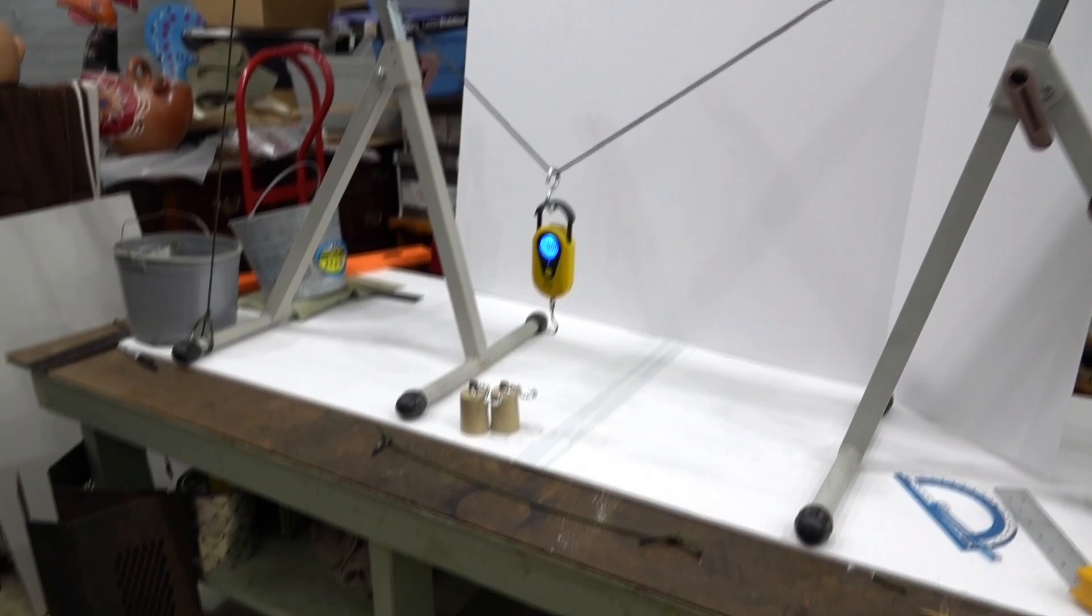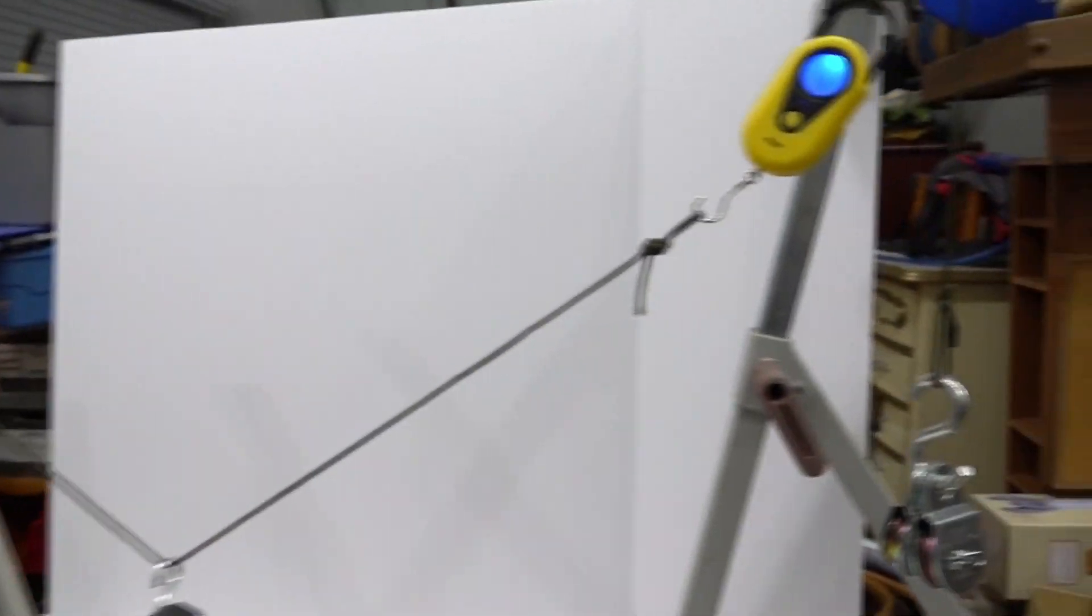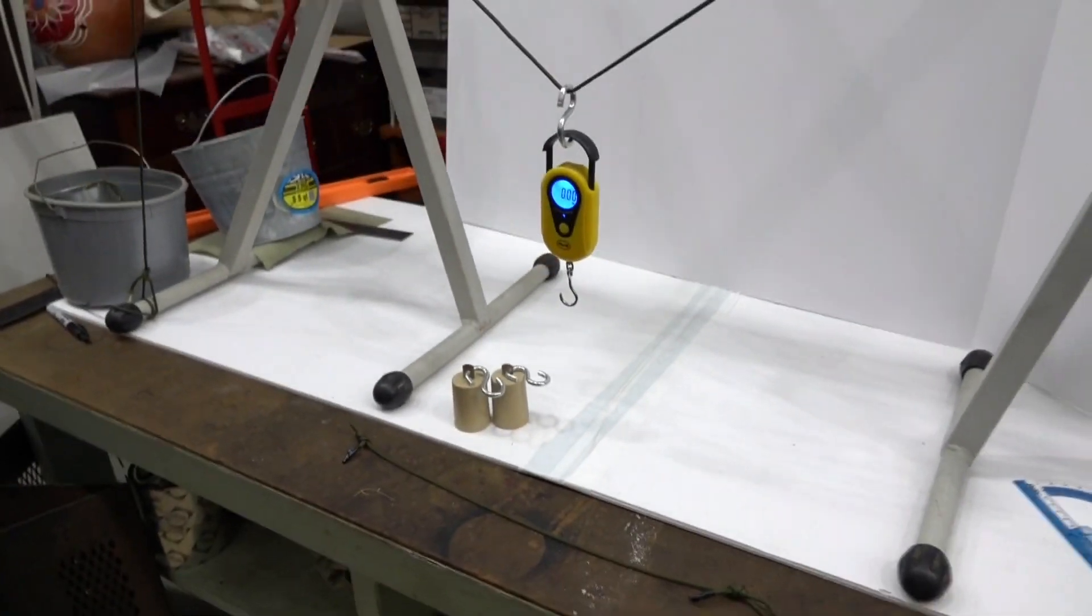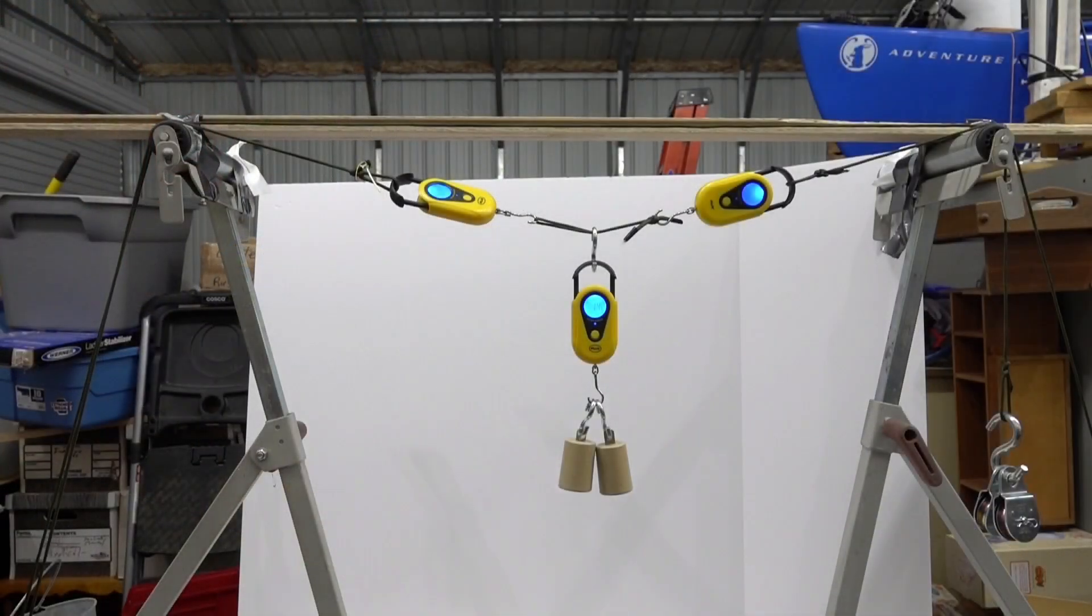An important point I need to make is that I tared all these scales in this configuration at each angle. They're all zero now, as you can see. So I've got this scale here hanging on this cable. That's actually paracord. And this scale and that scale, they're all tared to zero before I hang the weights on there.